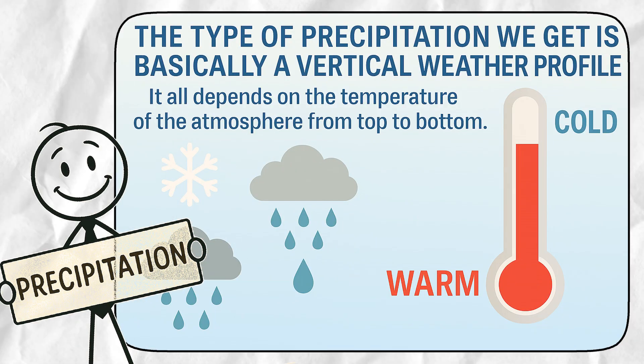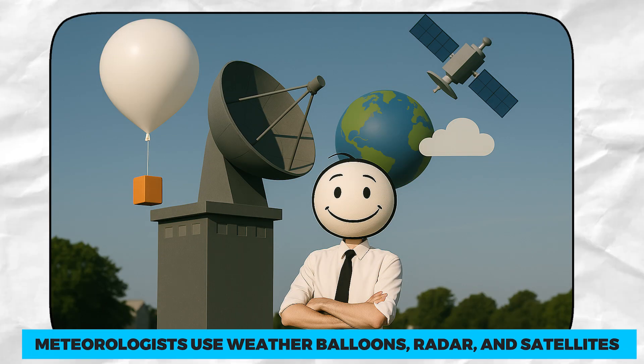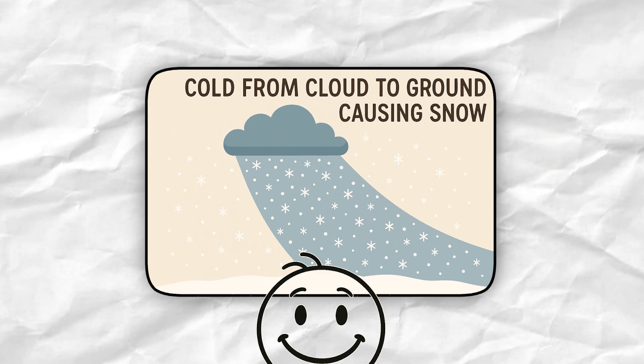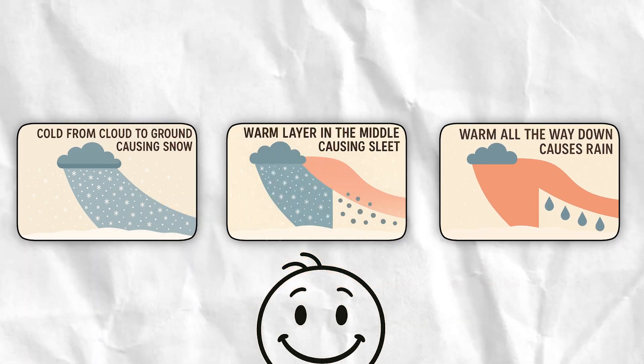The type of precipitation we get is basically a vertical weather profile. It all depends on the temperature of the atmosphere from top to bottom. Meteorologists use weather balloons, radar, and even satellites to track these layers. For example, cold from cloud to ground, snow. Warm layer in the middle, sleet. Warm all the way down, rain.